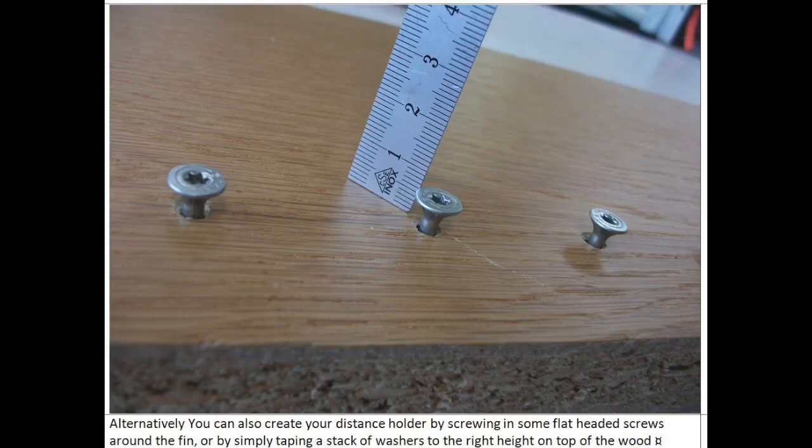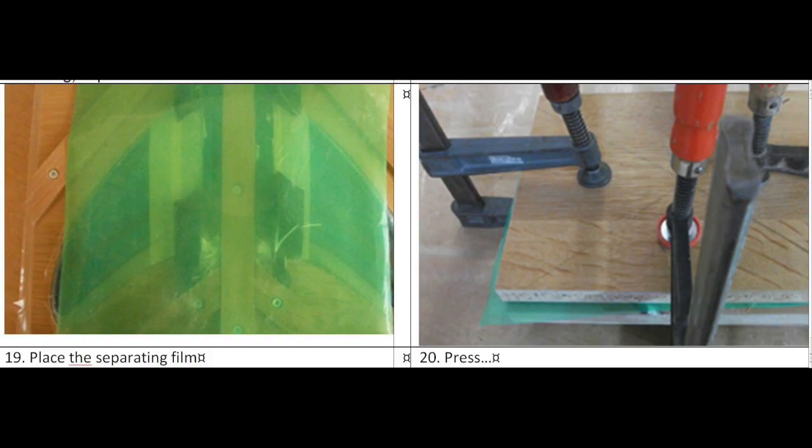If you screw in a couple screws on both sides of the fin, it will do the job as well. Just don't forget to put some separation foil between the lamination and your wood. There is no rule to say how much or how hard you have to press. You will have to find out yourself. If you press too hard, you will squeeze out too much resin.